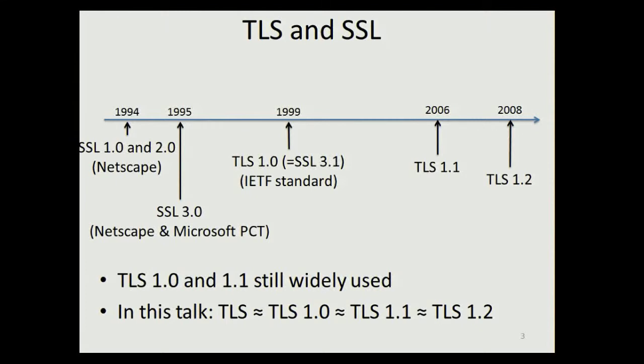Even though there are some security-critical differences between versions 1.0 and 1.1 — you may remember the BEAST attack from last year by Duong and Rizzo, which exploited a bad choice of IVs in the record layer of TLS — I will focus mainly on a different part of TLS, namely the handshake. In the handshake, there are only small differences between these versions, so when I refer to TLS in this talk I mean any version from 1.0 to 1.2.